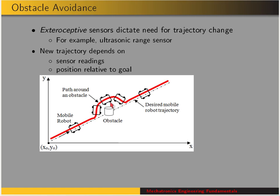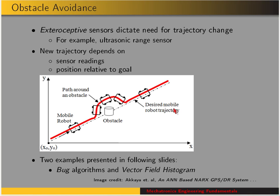Back to obstacle avoidance: exteroceptive sensors are what dictate the need for a trajectory change. In this figure, the nominal trajectory is shown as a dashed line, but then some sensor finds an obstacle, and we have to deviate from that nominal path. The new trajectory depends both on the sensor readings and the robot's position relative to the goal. Two examples are presented: the bug-type algorithm and vector field histogram — both are examples of obstacle avoidance approaches.